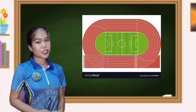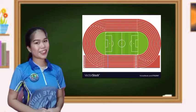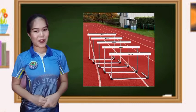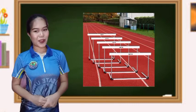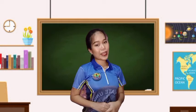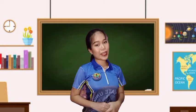Now let's proceed to the track facility. It is an oval shape with eight lanes. These events are typically held in a 400-meter track. We also have the equipment. We have the baton used in relay races, hurdle used in hurdle races, and starting blocks, starting guns, and spike shoes. Those are the facility and equipment in track and field.